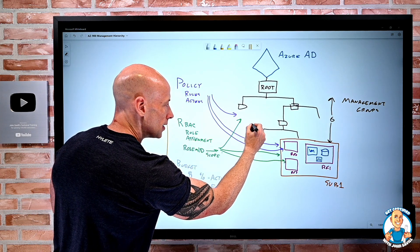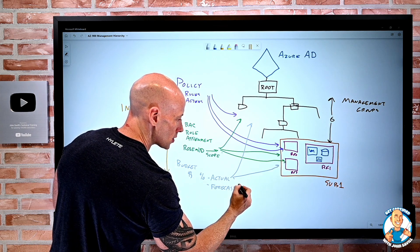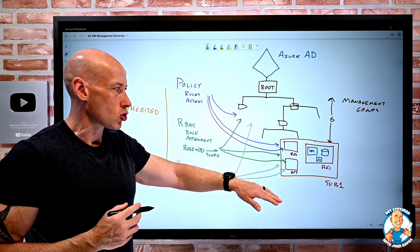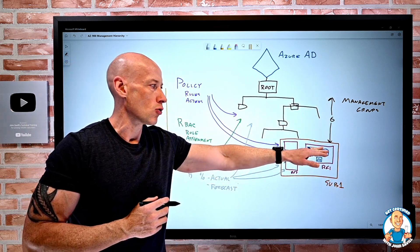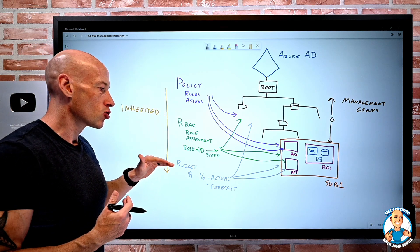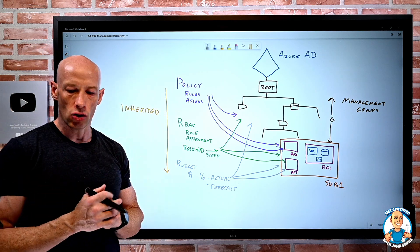And I can assign the budgets, you guessed it, management groups, subscriptions and resource groups. So those three constructs, the management group, the subscription, the resource group, I can use for those key policy, role-based access control and budget governance constructs.